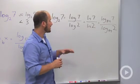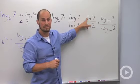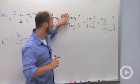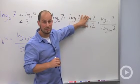Now point of clarification. This doesn't mean that the log of 7 is equal to the natural log of 7. What it means is that the ratio of these two, log of 7 over log of 2, is equal to the natural log of 7 over natural log of 2.